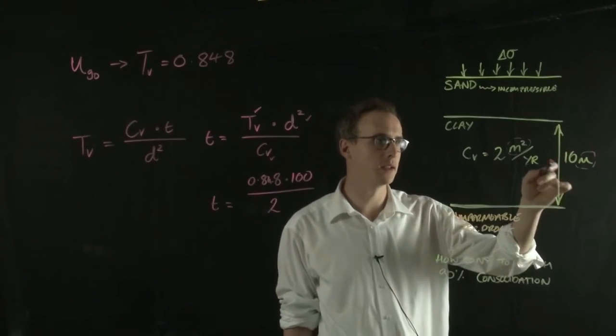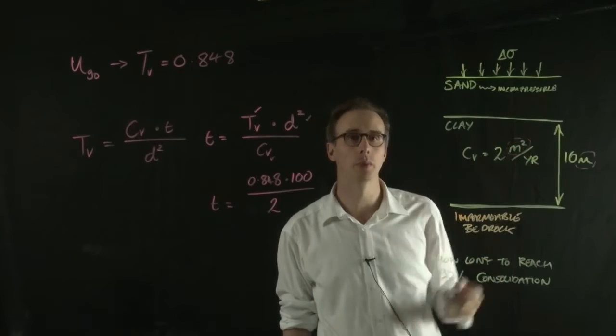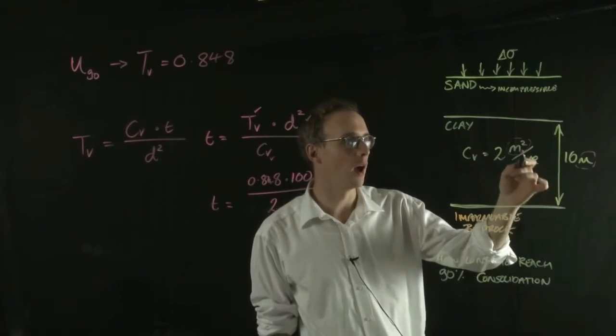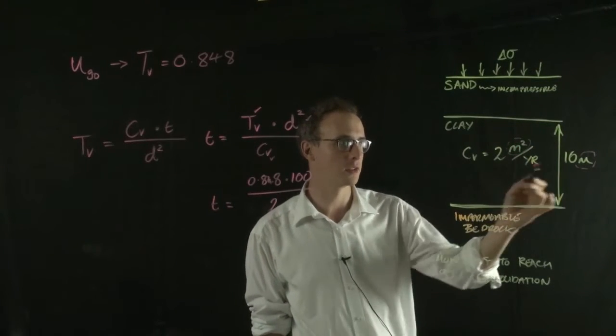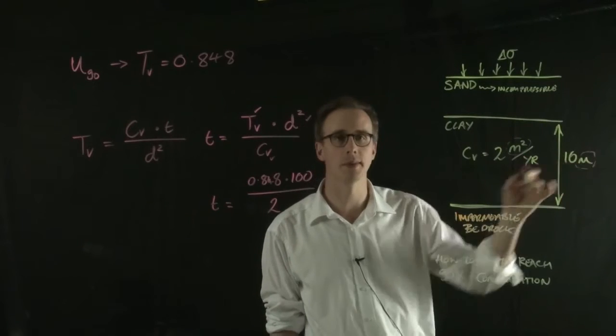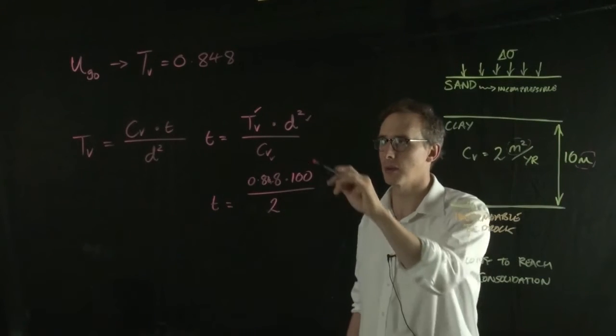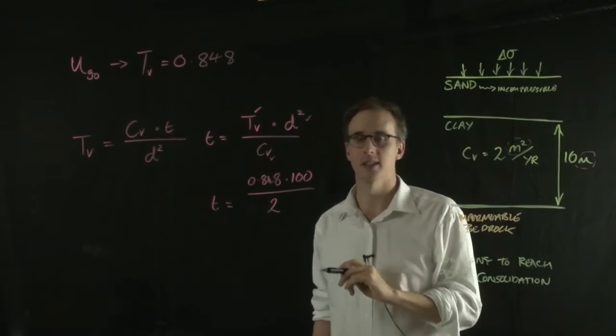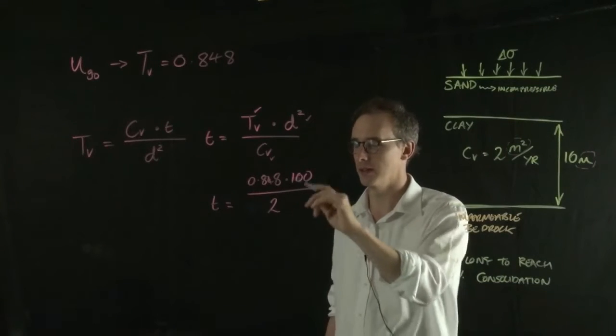If this was in, let's say, centimeters squared per year or per month, then you'd need to convert the units to be the same as your drainage pathway. So when you square them here, you can see that they cancel out within this equation.